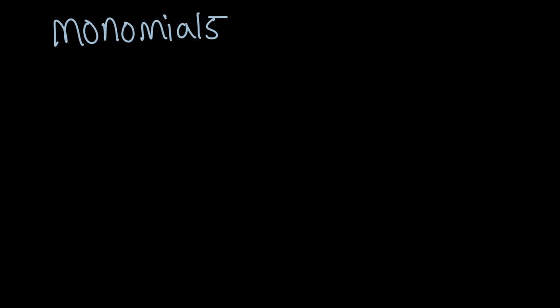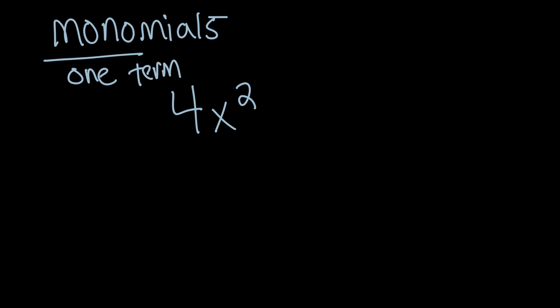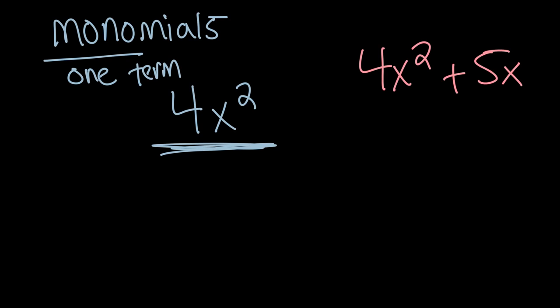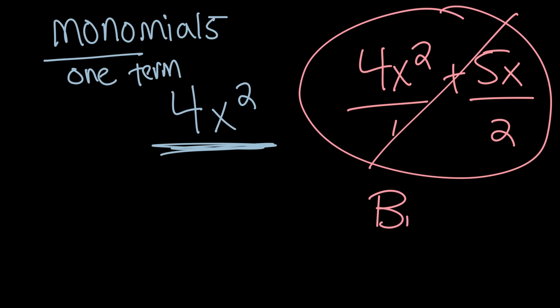In this video we're going to be multiplying monomials together. An example of a monomial is 4x squared — mono means one, referring to the number of terms, so 4x squared is all one term. What we won't be working with is something like 4x squared plus 5x, which has two terms — 4x squared is the first term, 5x is the second — making it a binomial, not a monomial.